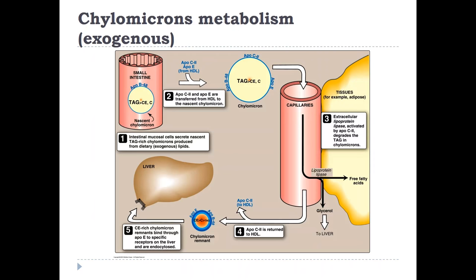The metabolism of chylomicrons represents the exogenous pathway for lipid metabolism. It all starts in the small intestine with production of ApoB48 by enterocytes. Around ApoB48, triacylglycerols accumulate, forming nascent chylomicrons, which are released into the lymphatic system and from there into the bloodstream. In the bloodstream, they acquire two other apoproteins — ApoC2 and ApoE — from HDL, forming a mature chylomicron with lots of triacylglycerols and three apoproteins: ApoB48, ApoC2, and ApoE. These mature chylomicrons travel to the peripheral tissues — specifically adipose tissue, muscle, and mammary gland, especially during lactation.